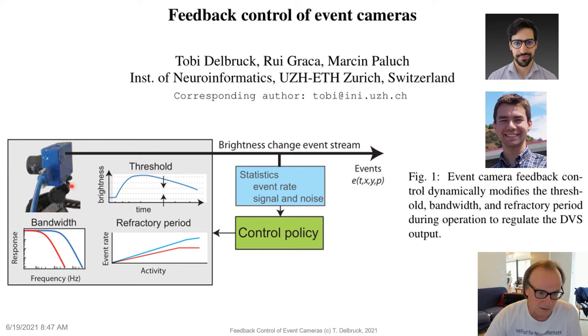But it's the idea that inside the camera, the DVS camera, you have controls that can limit the bandwidth of the camera or control the event threshold or control the refractory period between events. You can now measure statistically the output of the event camera, like the event rate or the signal and noise, and apply a control policy to go back inside the pixel and control the pixel parameters to limit some parameter of interest like for example the event rate.